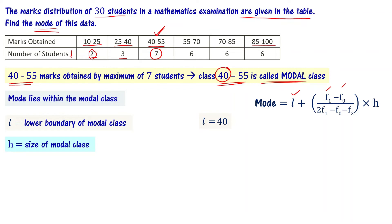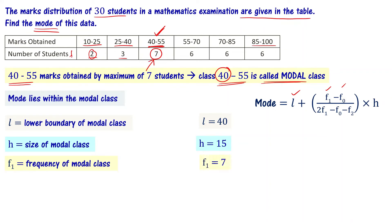H is the size of the modal class. The class size is 15, so H = 15. F1 is the frequency of the modal class, which is 7. So F1 = 7.